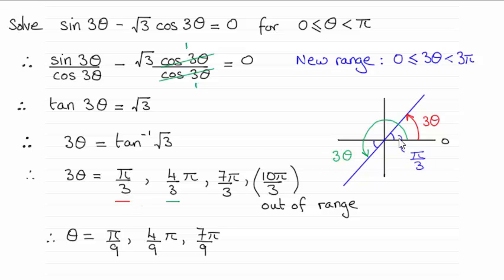So we mark in that this first angle here, the equivalent of the red three theta, is pi upon three radians.